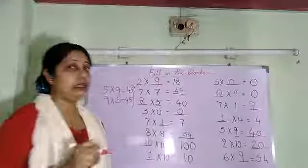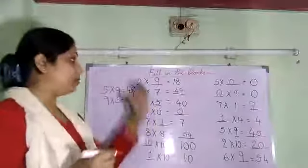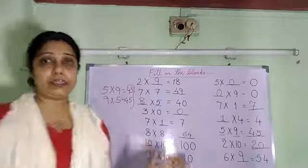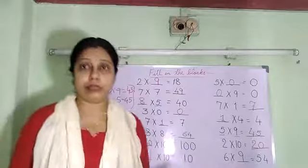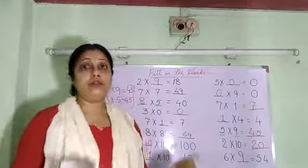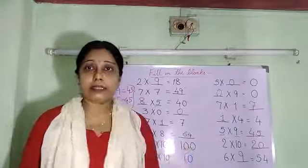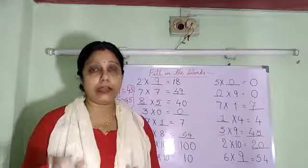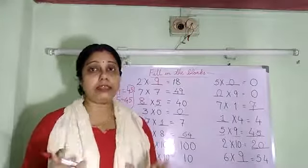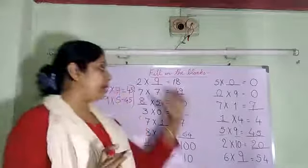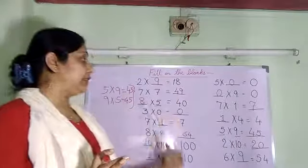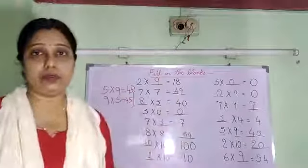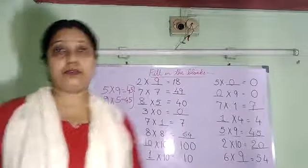Very easily you can fill these blanks if you know the multiplication table thoroughly. You have to learn the multiplication table up to 10 very nicely so that you can fill any type of dodging given to you. Thank you, children.